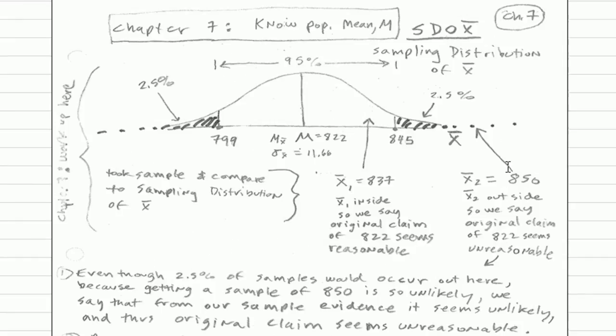Let's look at a picture down here. These are all the x-bars. This is the sampling distribution of x-bar. There's our mean. There's our standard error. The lower, the upper. Now our sample, we went out and got it. And even though there's a chance it's out here, we are going to say that it seems too unlikely to get this. So the original claim is not reasonable. But if we had gone out and gotten an x-bar of 837, it's within this range. We would then say the original claim seems reasonable.